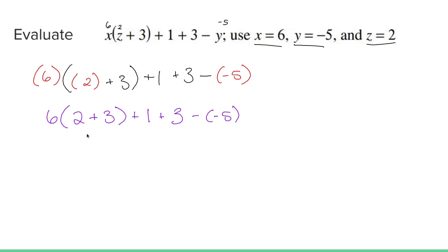PEMDAS says do everything inside groupings first, so that would be 2 plus 3. So you get 6 times 5, and you drop everything else down, plus 1, plus 3, minus negative 5.